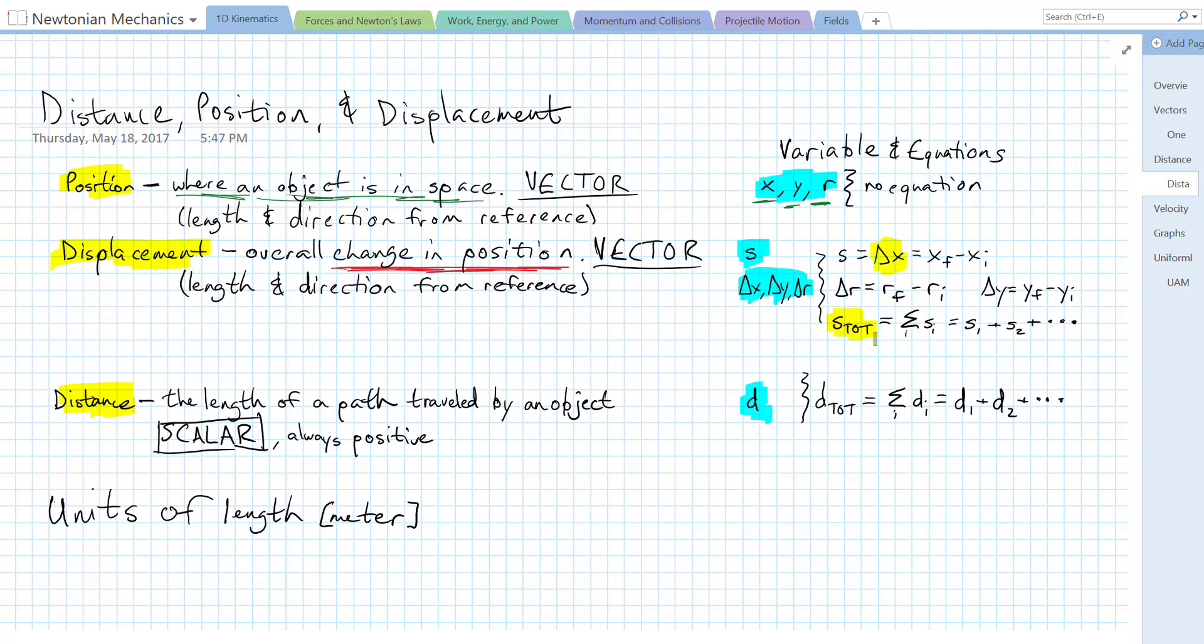Our last variable is distance. Distance is a scalar quantity. Distance is just the length of a path that you travel. It's a scalar, it's always positive, and it doesn't have direction.